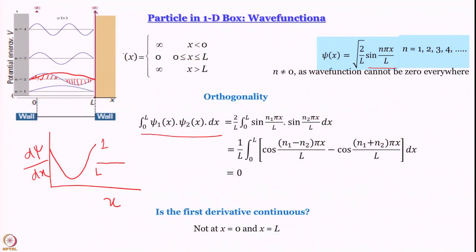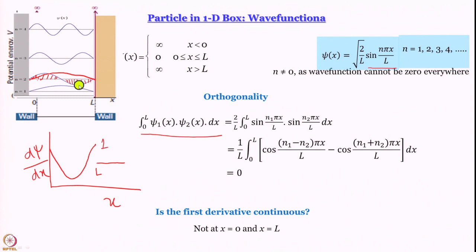We are discussing particle in a 1D box and we have succeeded in learning about the wave functions of a quantum particle in a one-dimensional box. The wave functions have turned out to be sine waves and only some are allowed. The wave functions are psi of x equal to root over 2 by L sine n pi x by L, where n equals 1, 2, 3, 4 and so on — positive integers.